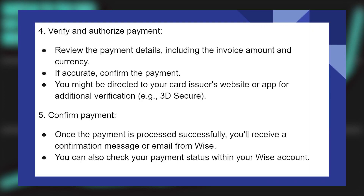Review the payment details including the invoice amount and currency. If accurate, confirm the payment. You might be directed to your card issuer's website or app for additional verification, for example 3D Secure. Once the payment is processed successfully, you will receive a confirmation message or email from Wise. You can also check your payment status within your Wise account.